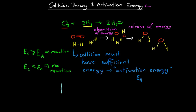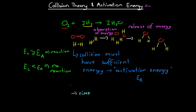If we graph energy against time, we would have something that looks like this: we would have the energy of our reactants, then we'd get an absorption of energy, then a release of energy, and then we'd have our products. The energy of our particles increases as the bonds are broken, and then as bonds form, they release energy. That is the process of energy in a chemical reaction. To apply this to a real-world example, let's look at the petrol in our car.